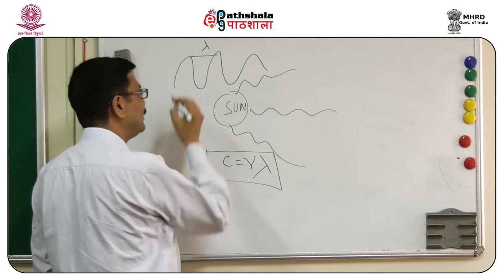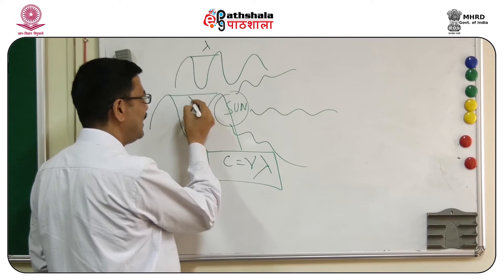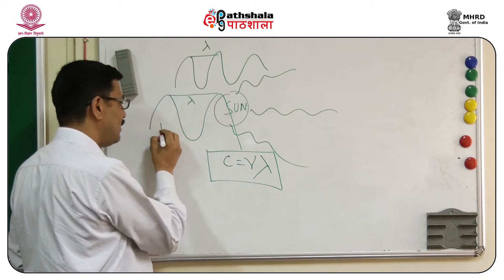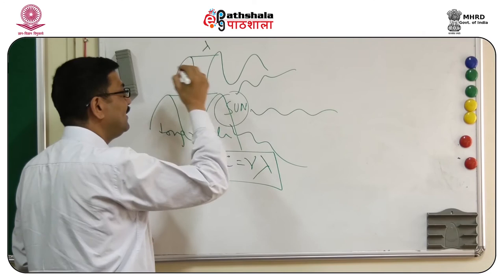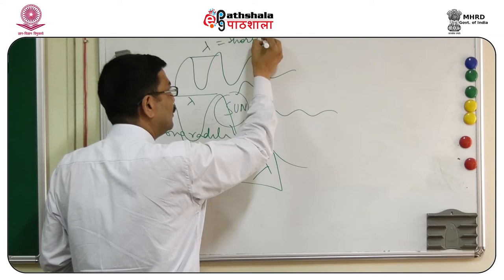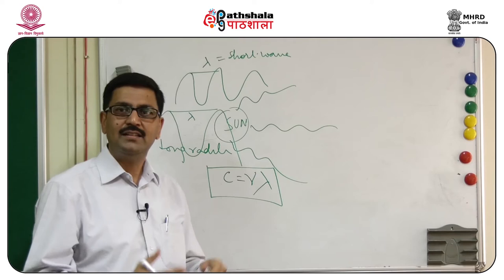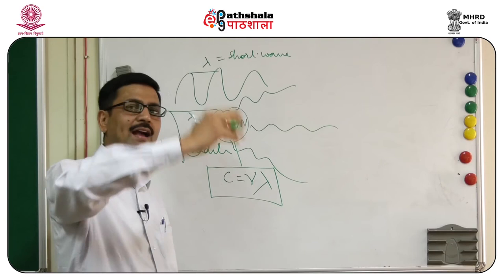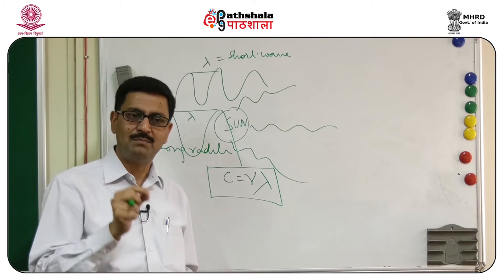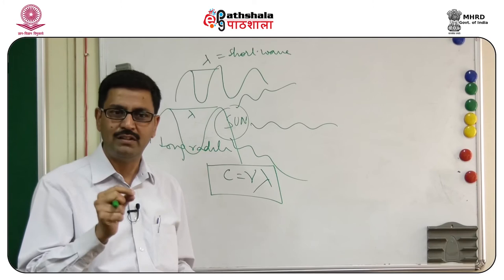If lambda is large, the energy is in the form of long wave radiation. If the distance of lambda is short, that is called short wave radiation. The sun's energy which comes to the surface of the earth is in the form of short wave radiation, whereas when it strikes the surface and reflects back, it is in the form of long wave radiation. Hotter the body, shorter the wavelength; cooler the body, longer the wavelength radiation.